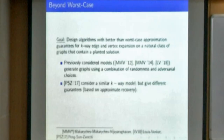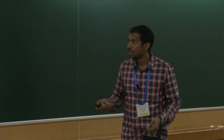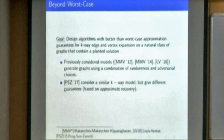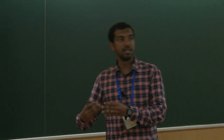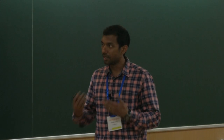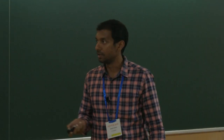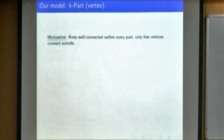What is known beyond worst case? Here the goal is to design algorithms with better guarantees than worst-case approximation, but only for certain class of graphs or graphs generated using some models. Previously considered models are generally of the form combining randomness and adversarial choices — for example, some part of the graph is a G(n,p) along with some adversarial edges. Peng, Sun and Zanetti in a recent work consider a similar k-way model to what we will do; however, our approximation guarantees are going to be a bit different.